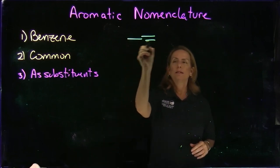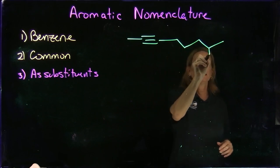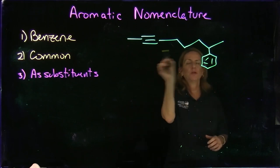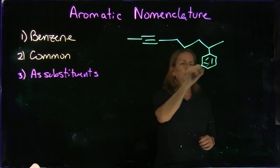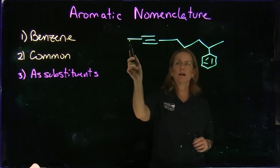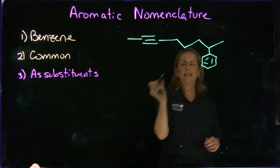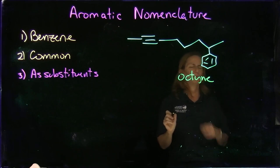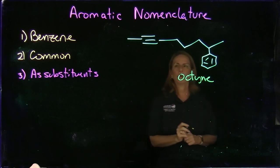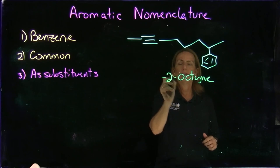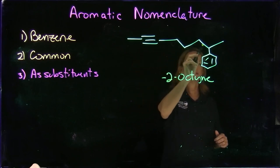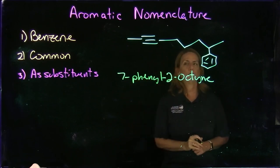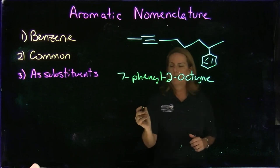For example, if we have an alkyne chain with a benzene ring attached to it, we name this as an alkyne. Counting the carbons: one through eight gives us octyne. The triple bond gets the lower number, so this is 2-octyne. The benzene group hanging off carbon seven is a phenyl group — not 'benzene' — so the full name is 7-phenyl-2-octyne.